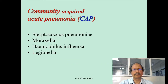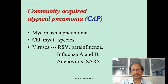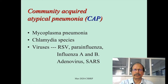For community acquired pneumonias, the main pathogens are Streptococcus pneumoniae, Moraxella, Haemophilus, and Legionella. For community acquired atypical pneumonias, by definition they are viral pneumonias — Mycoplasma and Chlamydia may also be included. Many viruses can cause this community acquired atypical variety of pneumonia.